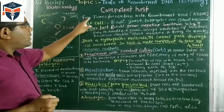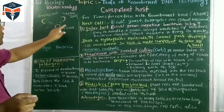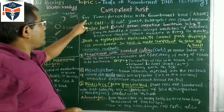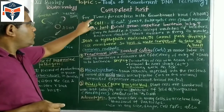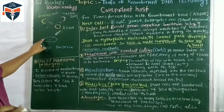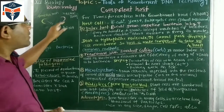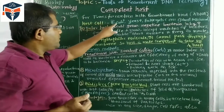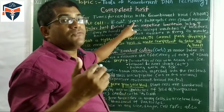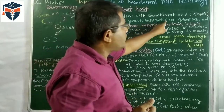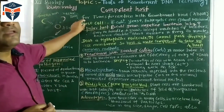This competent host undergoes transformation with recombinant DNA — meaning this competent host is required to transfer this recombinant DNA. Which organisms serve as competent hosts? The competent host may be E. coli, unicellular algae, unicellular fungus such as yeast, or eukaryotic cells such as plant cell and animal cell. These are specific hosts where recombinant DNA is introduced.